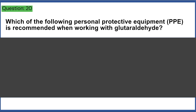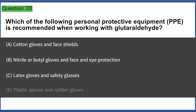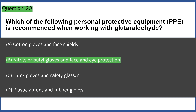Which of the following personal protective equipment (PPE) is recommended when working with glutaraldehyde? a) cotton gloves and face shields, b) nitrile or butyl gloves and face and eye protection, c) latex gloves and safety glasses, d) plastic aprons and rubber gloves. Answer: B, nitrile or butyl gloves and face and eye protection.